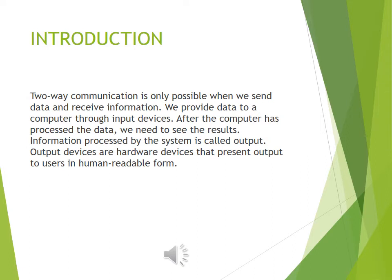We are going to start from the introduction of output devices. Two-way communication is only possible when we send data and receive information. We provide data to a computer through input devices. After the computer has processed the data, we need to see the results. Information processed by the system is called output.